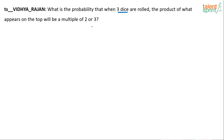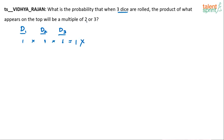What appears on top should be a multiple of two or three. We have got three dice — d1, d2, and d3. For example, let's say all three of them show one, one, and one. What will be the product? One into one into one is equal to one. Is this the right case or wrong case? Wrong case — this cannot be considered because we want the product to be a multiple of two or three.